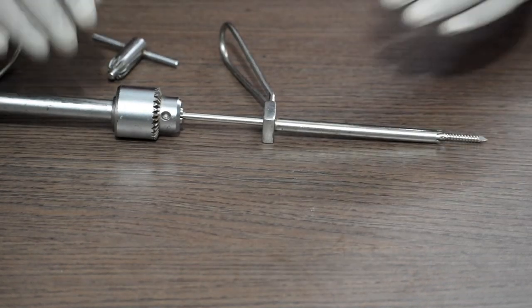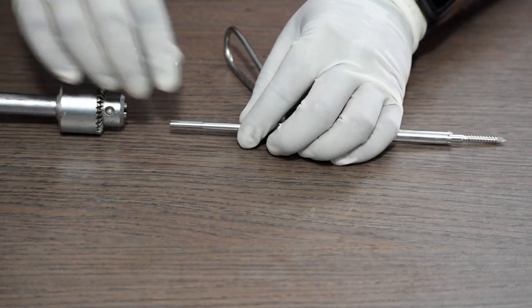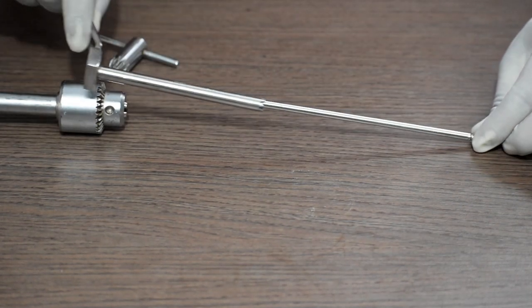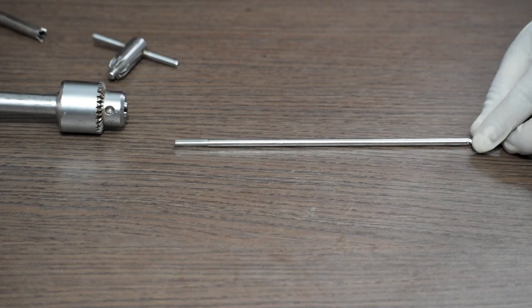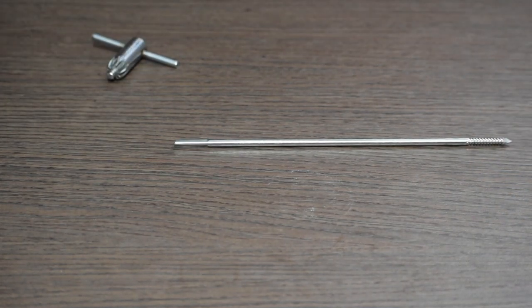Once the Schanz pin is inserted, we remove the T-handle chuck, we also remove the protection sleeve, and the Schanz pin stays back.